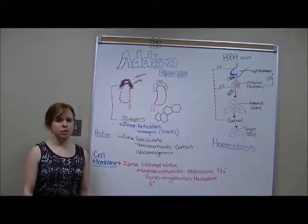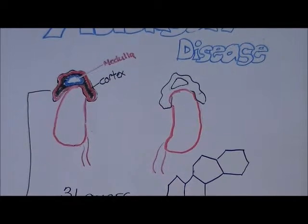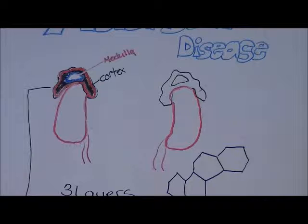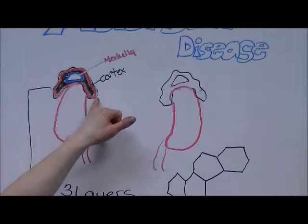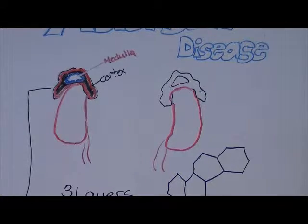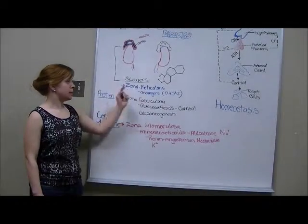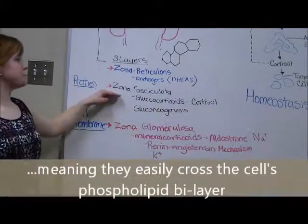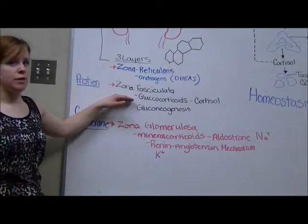We're going to begin with the normal physiology of the adrenal glands. They are located one on top of each kidney, and there are two layers. One is called the medulla, which is primarily involved with the sympathetic nervous system and releases epinephrine and norepinephrine in response to stressful situations. The cortex is also related to stressful situations and has three layers. The zona reticularis is the innermost layer and releases the androgenic sex hormone. The zona fasciculata is responsible for the release of glucocorticoids, which are involved in cellular metabolism within the body.